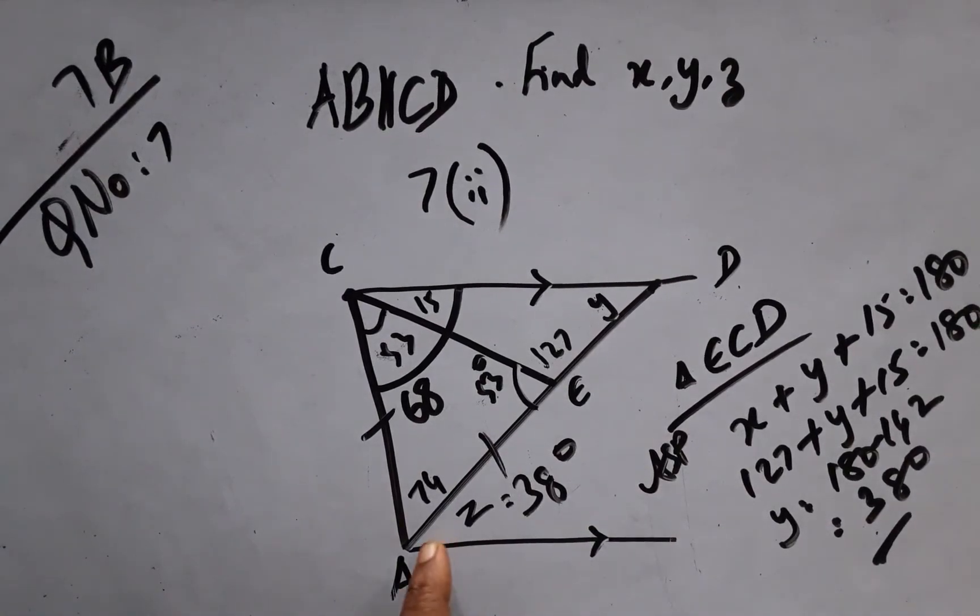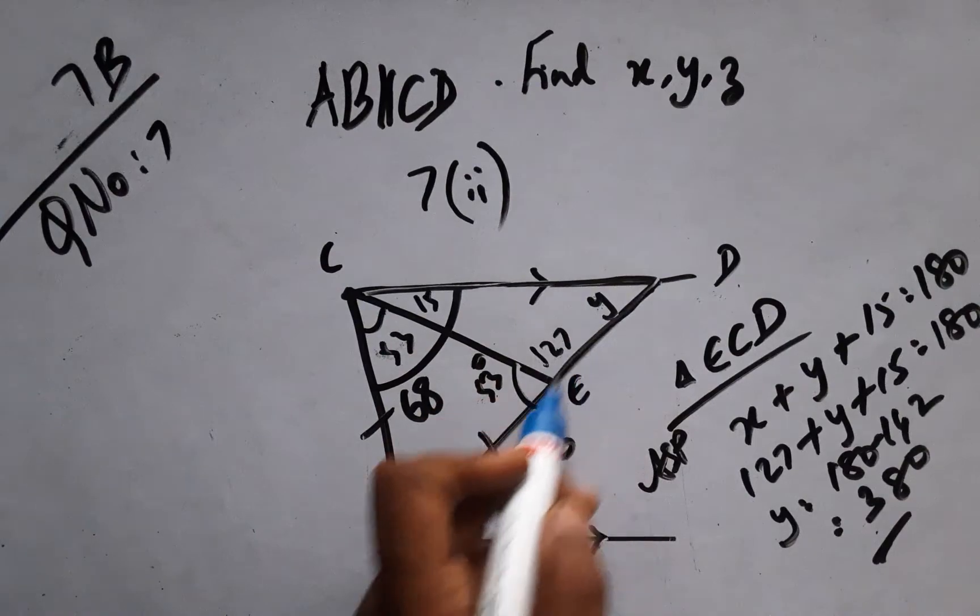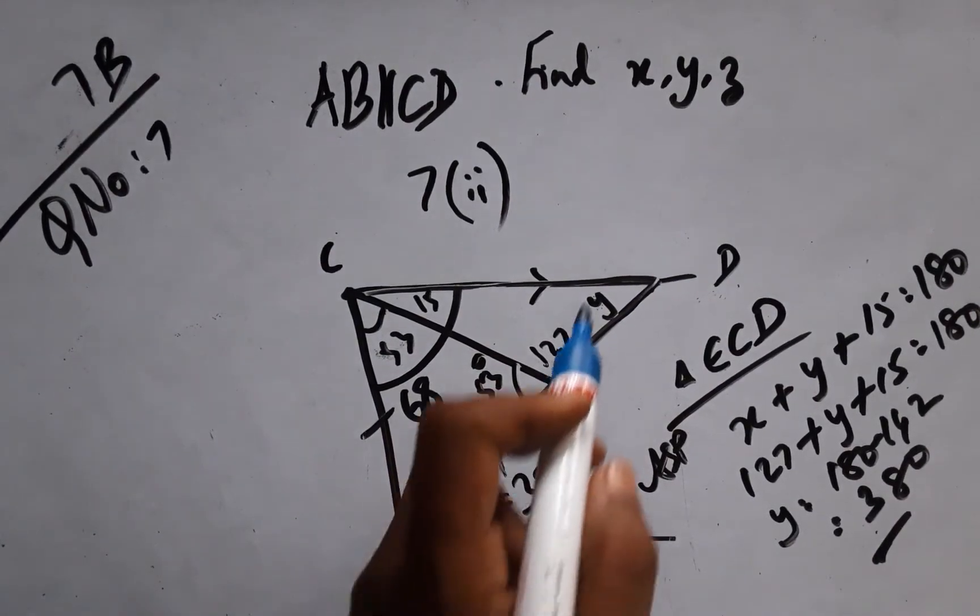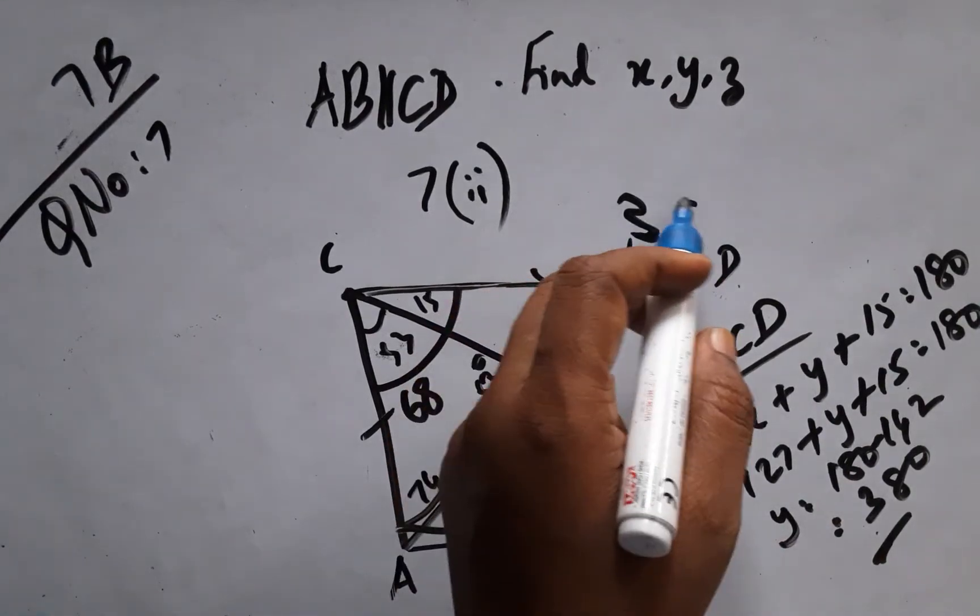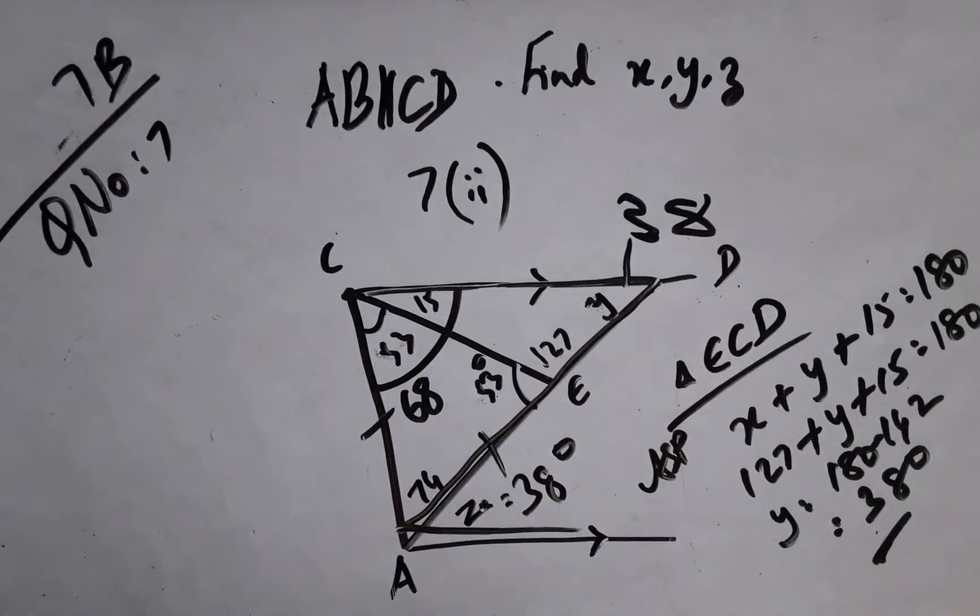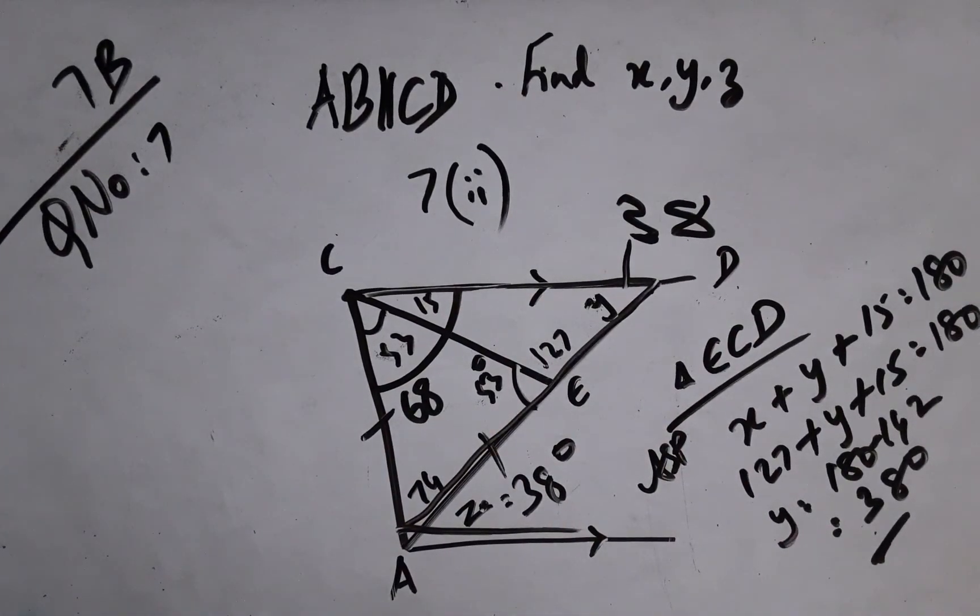And better than that, we can go for this Z here, which is alternate angles. Z equals Y, therefore Y equals 38 because alternate interior angles are equal for two parallel lines under a transversal.